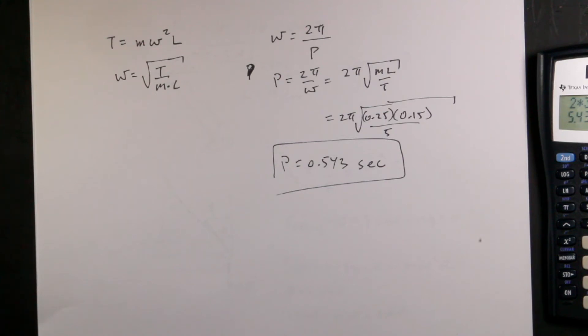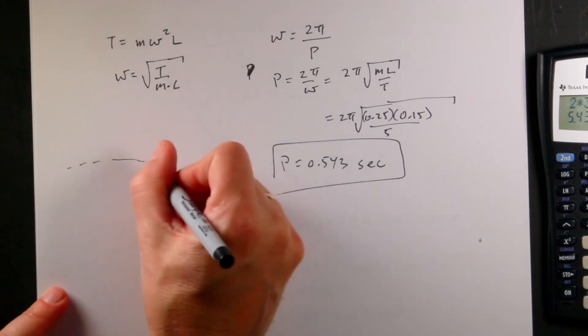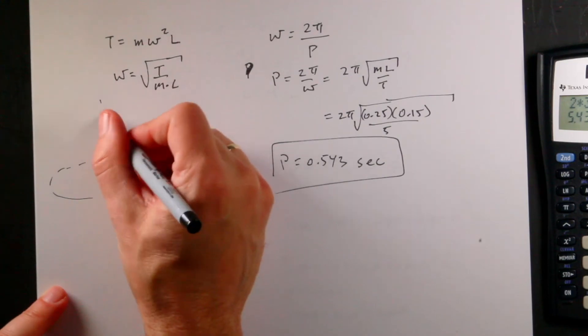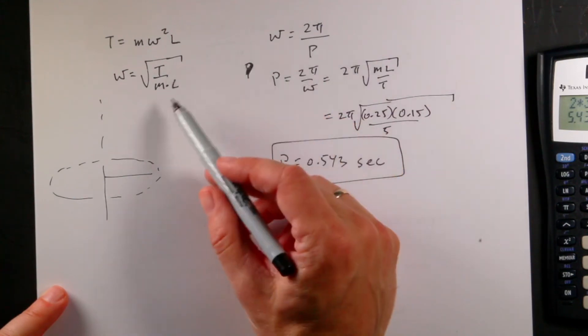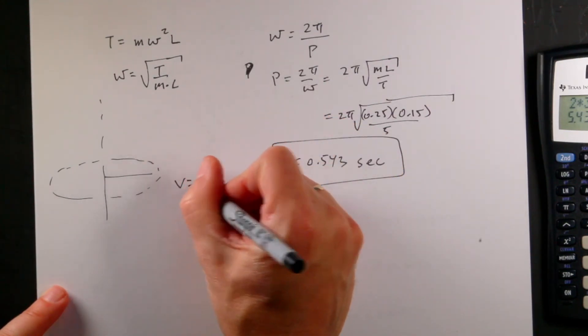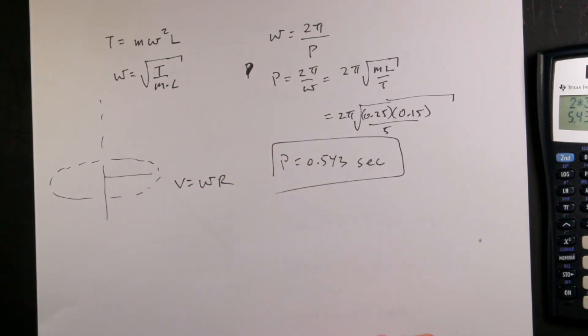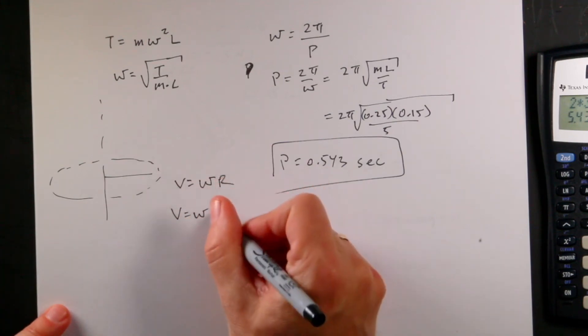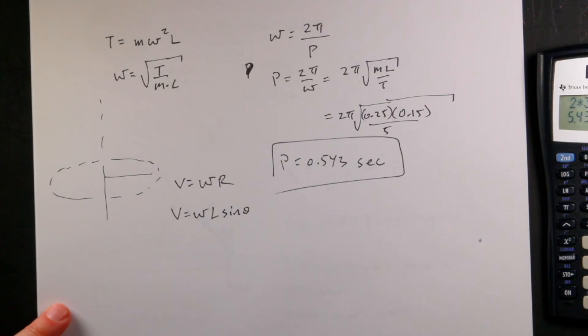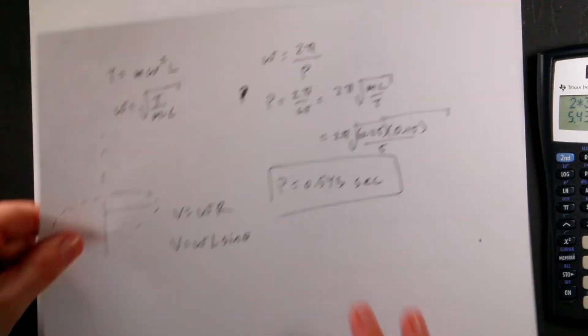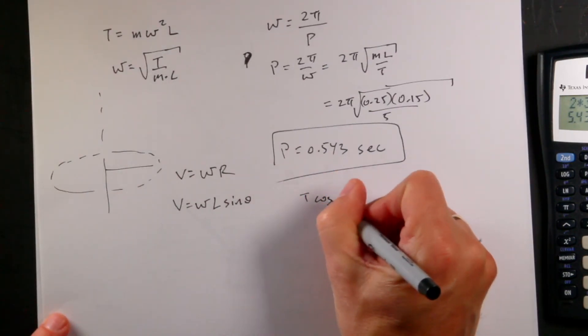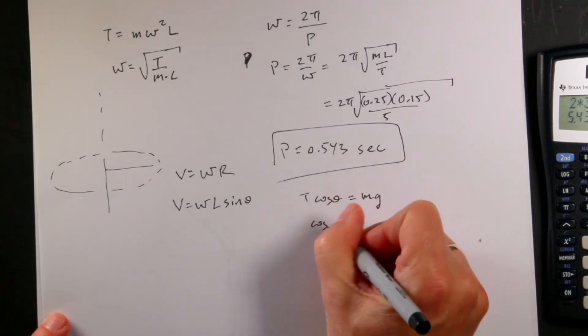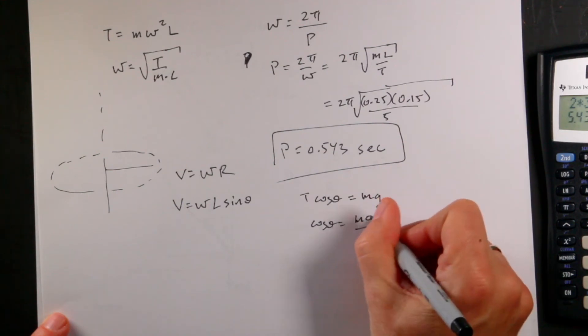Okay. Now I want to find the speed, v. If I look at my circle here, right there, I can find the linear speed based on the angular velocity, which I have. I have the angular velocity. So I can say, v equals omega times r. But I don't know r. I could say, v equals omega times r, which is l sine theta, but I don't have theta. Okay. So now you can see where this is useful. If I go back to my y equation, I have that, and I can solve for theta.